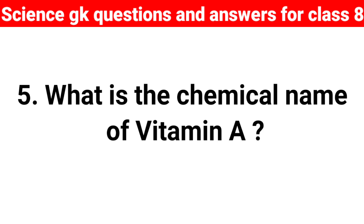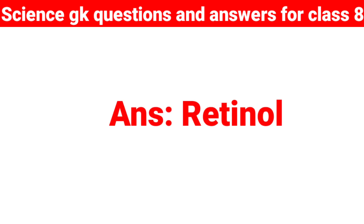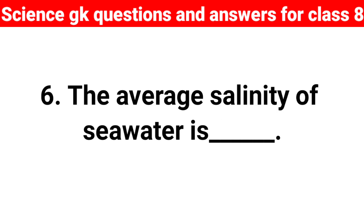Question number five: what is the chemical name of vitamin A? Answer: retinol. Question number six: the average salinity of sea water is — answer: 35%.